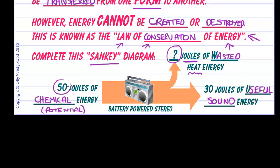But we started with 50. So remember, energy cannot be destroyed or created out of nothing. So we have 50, we end up with 30, so this must be 20 joules of wasted heat energy. And this is called a Sankey diagram. You must be able to draw one of these. And it's fairly straightforward to see that the energy before must equal the total energy afterwards.